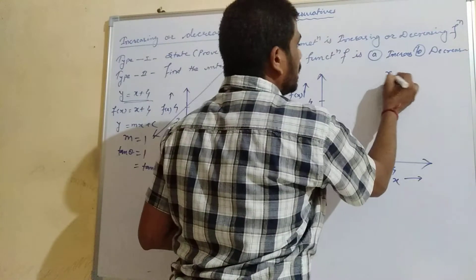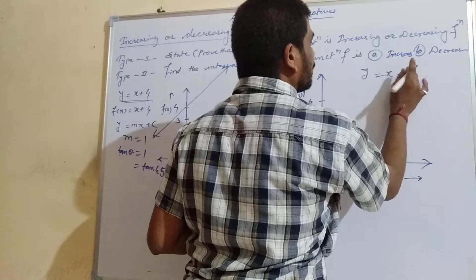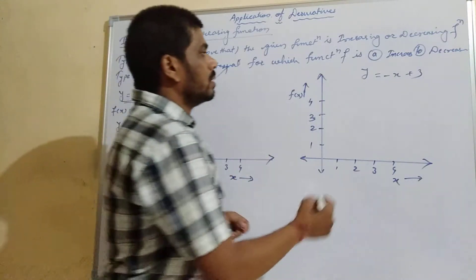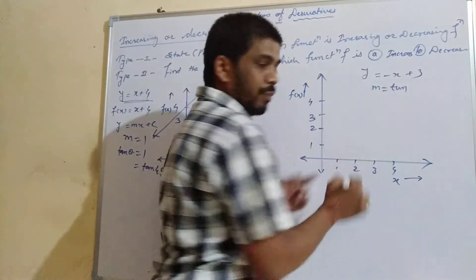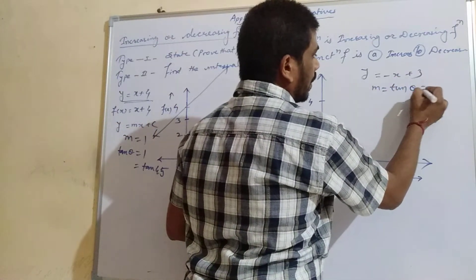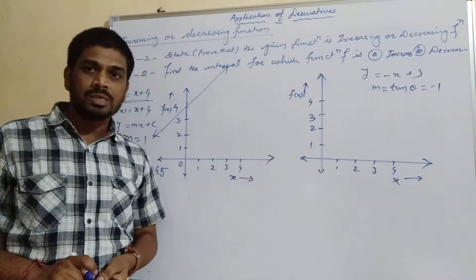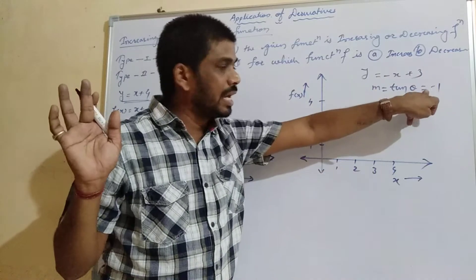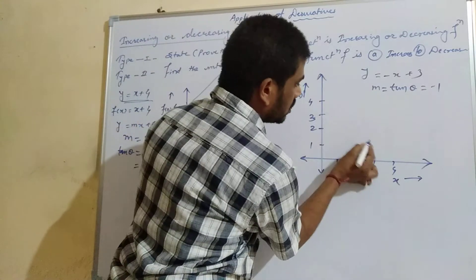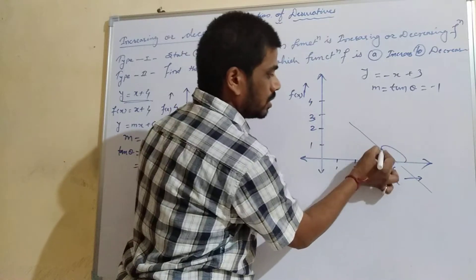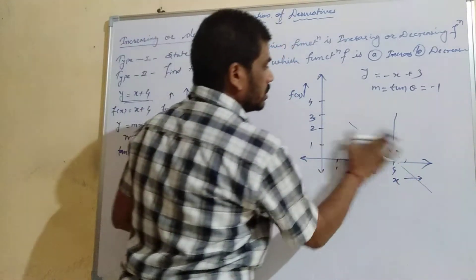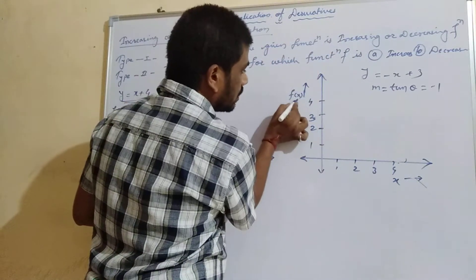If the equation given is y = -x + 3, then comparing with y = mx + c, m is equal to tan theta equal to minus 1. Slope is minus 1. That means 1 is tan 45, but due to the negative sign, the angle will be 90 plus 45, which is 135 degrees. So when the angle is 135 degrees, the slope will be in that direction. When we put x equal to 0, y equals 3, and the line rotates in this direction.